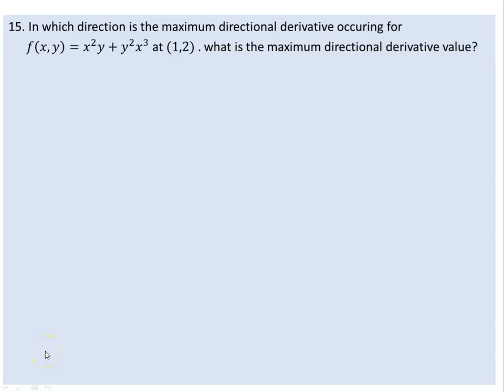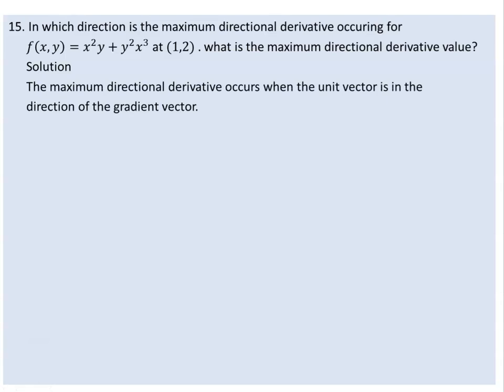In which direction is the maximum directional derivative occurring for this function at point (1,2)? The maximum directional derivative and the maximum slope occur when the unit vector is in the same direction as the gradient vector.